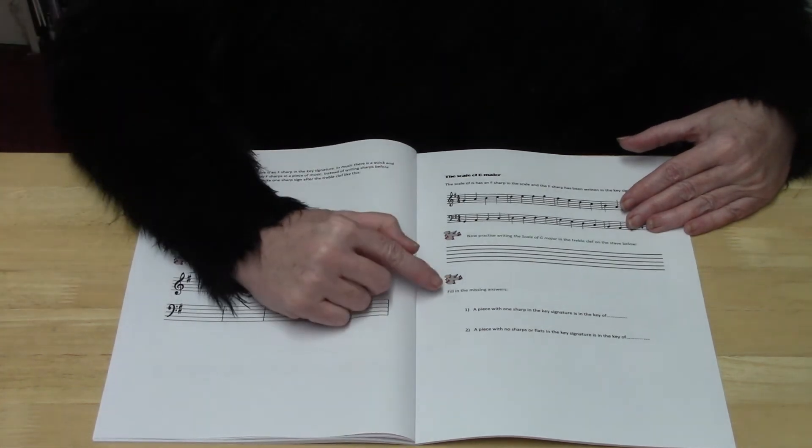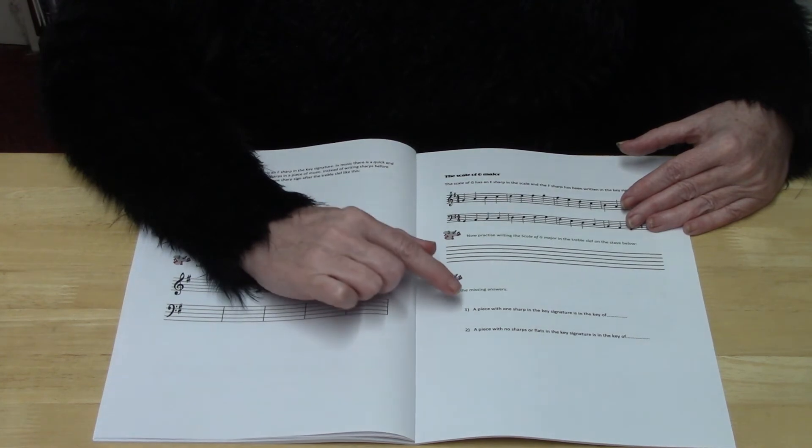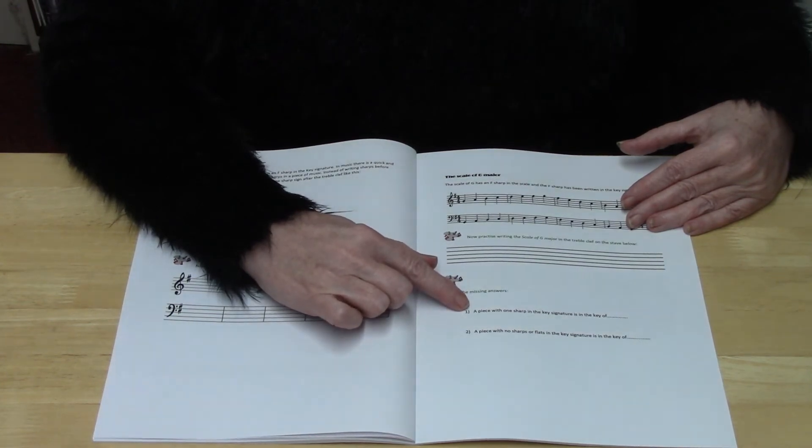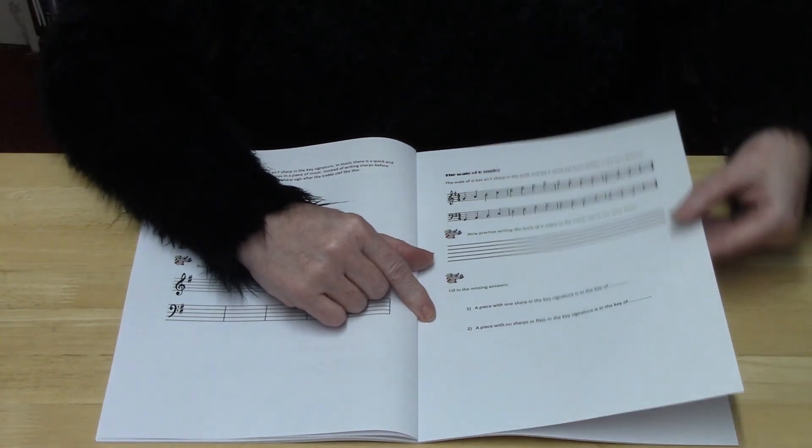A little exercise then follows where you're asked to name a piece with one sharp in and say what key it's in, and then a piece with no sharps or flats in and say what key that is in.